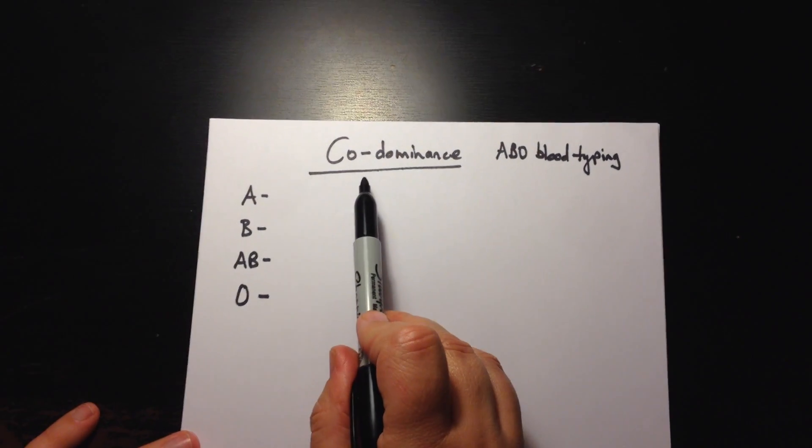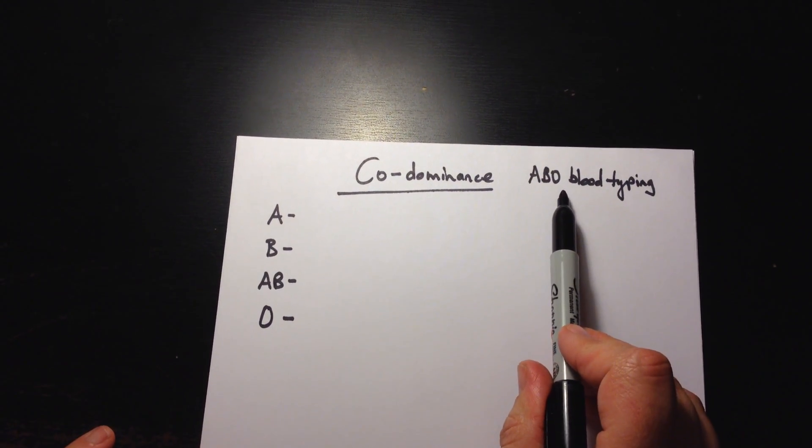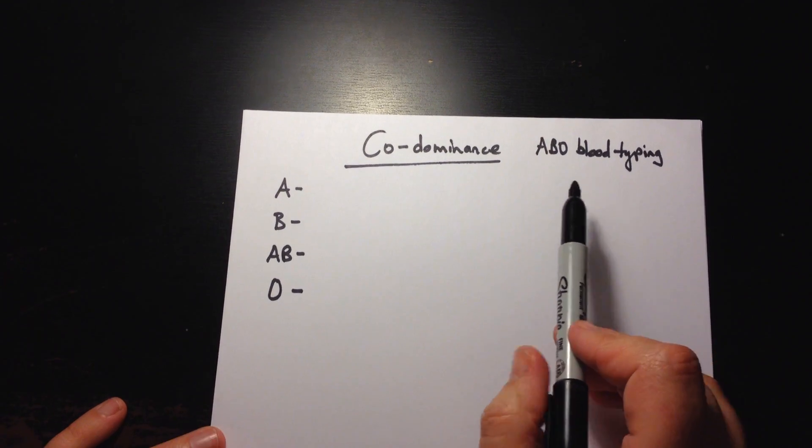I'm going to explain to you co-dominance and I'm going to use the example of the ABO blood typing or the blood groups that we find in human beings.